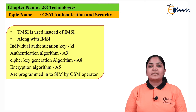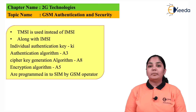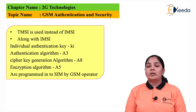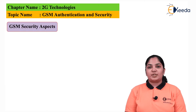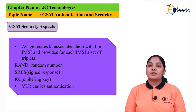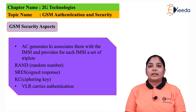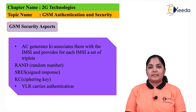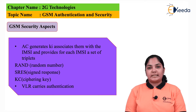The authentication center generates various keys and associates them with the IMSI number of the user. For every IMSI number, the authentication center provides a set of three data items, also called triplets: a random number called RAND, a signed response called SRES, and a cipher key called KC. These three items are generated by the authentication center.